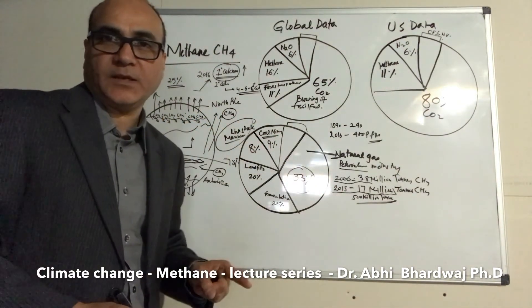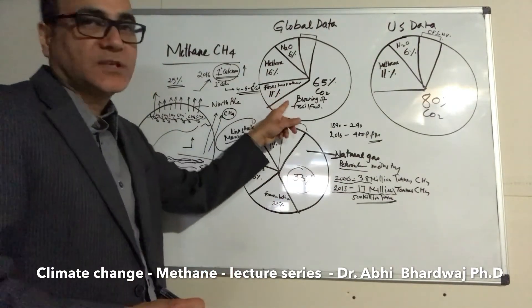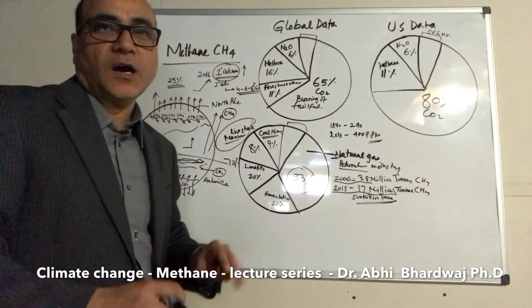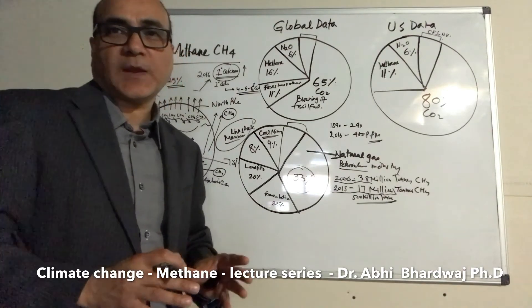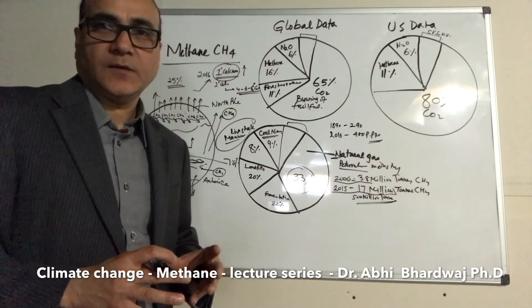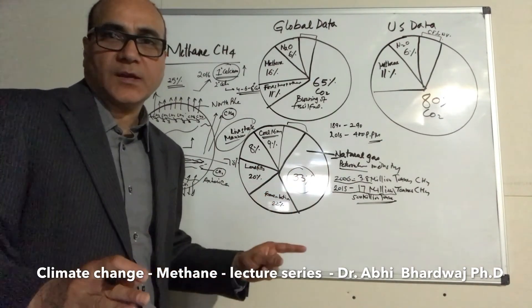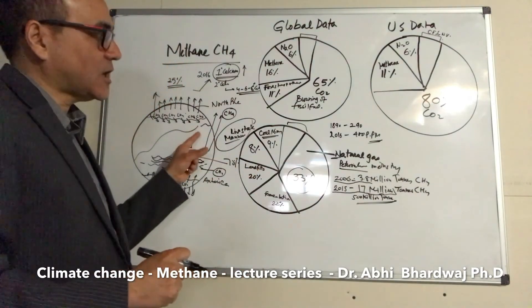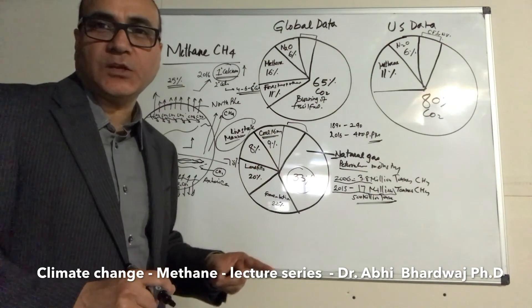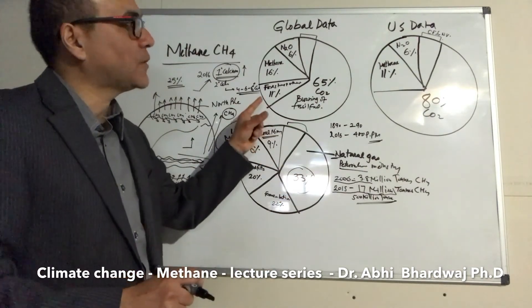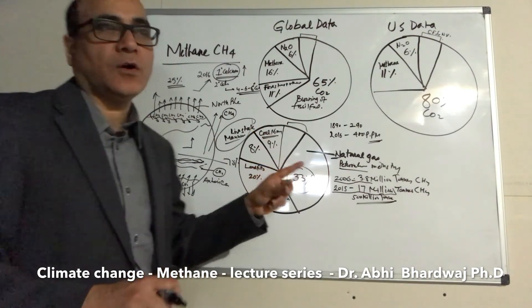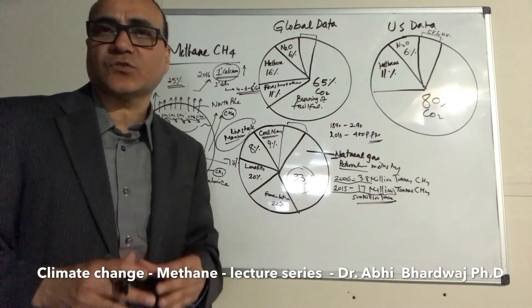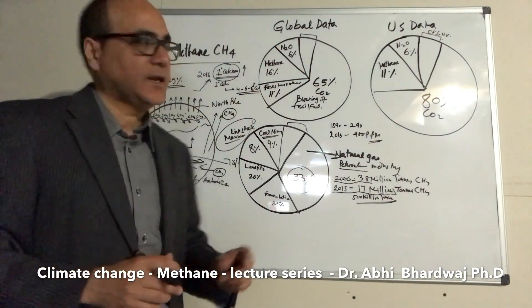If we do not stop pumping greenhouse gases into the atmosphere and halt this temperature rise, we will reach a point where it becomes uncontrollable and we will not be able to save life on this planet. History has shown us that 50% of life was wiped out 55 million years ago during the Paleocene-Eocene period. This time it is much worse because it is entirely human-induced — it is not natural — and it can be prevented if governments around the globe stand up and act as soon as possible.